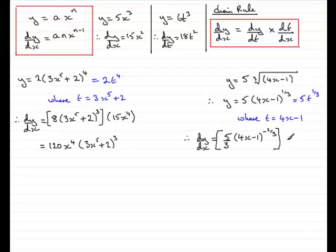And we now need to multiply this by dt by dx. We need to differentiate t with respect to x. And if we do that, if we differentiate 4x with respect to x you just get 4. Differentiate the constant minus 1 and you get 0. So it just finishes on 4.